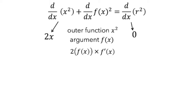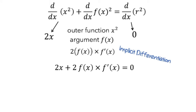What we just did here was a technique called implicit differentiation, where we used the chain rule without having an explicit formula for f of x. Putting this together, we have 2x plus 2 f of x times f prime of x equals 0. We can do some algebra and we will get that f prime of x equals negative x over f of x.